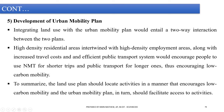Fifth activity: development of the urban mobility plan. Integrating land use with the urban mobility plan would entail a two-way interaction between the two plans. High-density residential areas intertwined with high-density employment areas, along with increased travel cost and efficient public transport, would encourage people to use non-motorized transport for shorter trips and public transport for longer ones, encouraging low-carbon mobility.